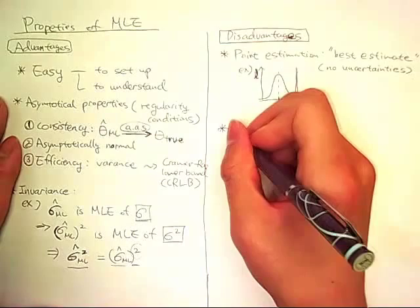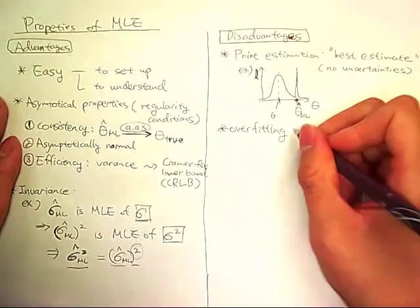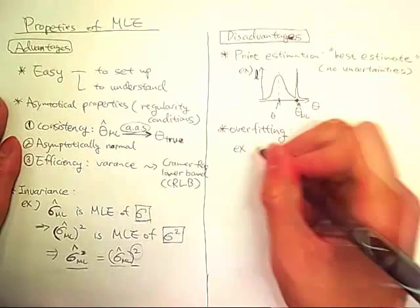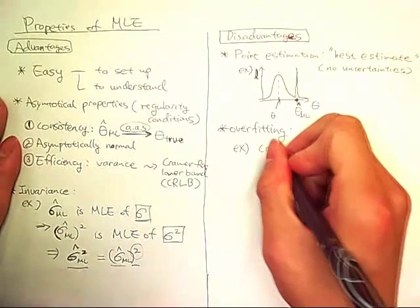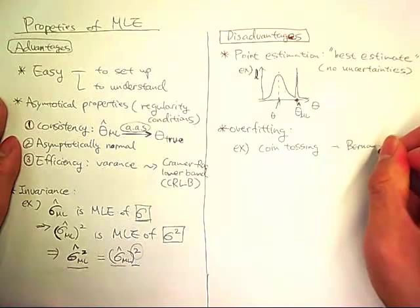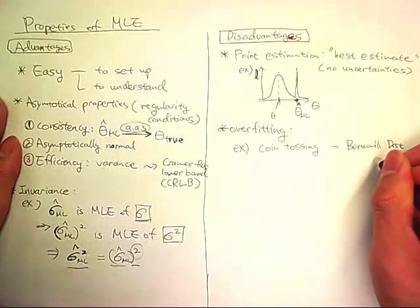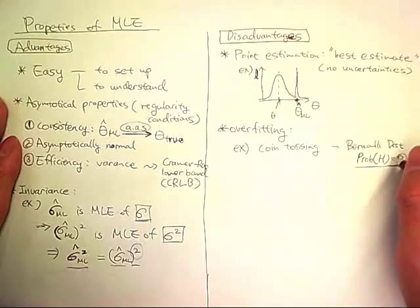And then next disadvantage is overfitting. So for example, let's think of the coin tossing problem. This follows Bernoulli distribution with probability of getting head is P. This is unknown and we want to estimate the P.